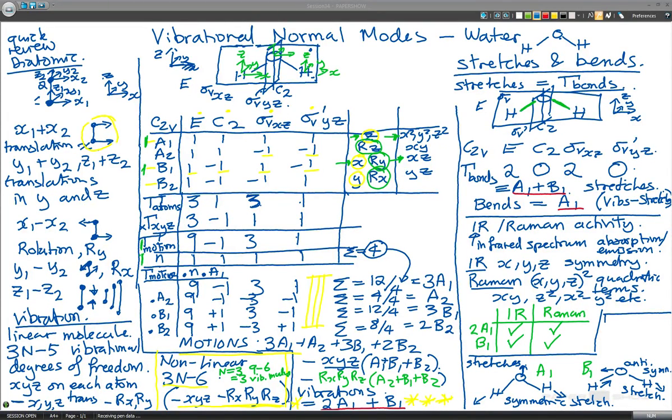Now for the bend, bending vibration what we have is something that looks a little bit like this. There's our water, two hydrogens move together and maybe the oxygen moves up a little bit. And again that has got symmetry of A1. Okay so I have run out of a page or screen to write on.